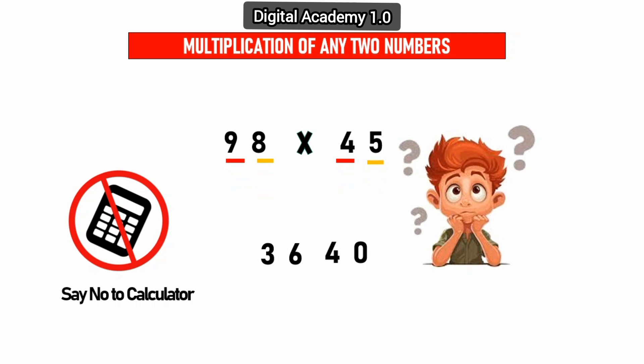In the second step, multiply digit first with fourth digit. Like 9 times 5 equals 45. Similarly, digit second with third. Like 8 times 4 equals 32.